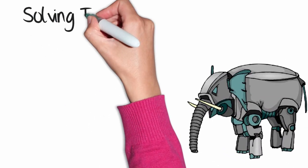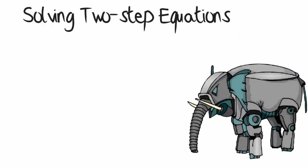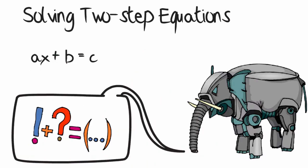In this lesson we will be solving two-step equations using both paper and algebra tiles. We will be looking at two examples that take the form of ax plus b equals c. So let's begin.